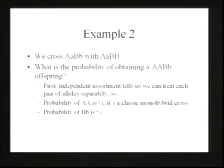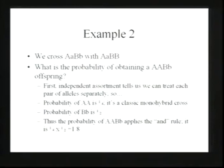We saw that independent assortment says we can treat each pair of alleles separately. The probability of big A, big A in a classic monohybrid cross is one-fourth, just by doing a Punnett square. Probability of big B, little b is one-half. You'll get to the point where you can simply look at these crosses and know the probability of each event. Until then, you might want to work out Punnett squares to get fluent with it. The probability of big A, big A, big B, little b — applying the AND rule and multiplying individual probabilities — is one-eighth.